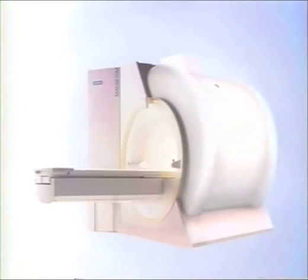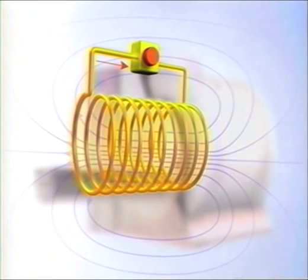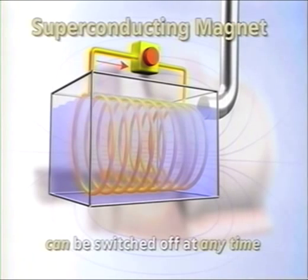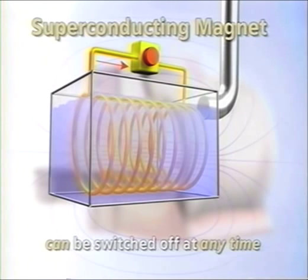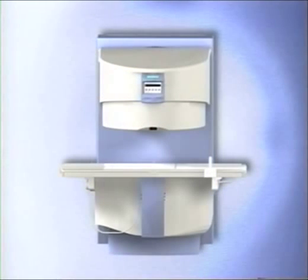Superconducting magnets are used to generate higher magnetic field strengths. In this case, the wire coils through which the current flows are cooled by liquid helium to 4 Kelvin above absolute zero, which is minus 269 degrees Celsius. The current is provided by a power supply unit during installation. But once superconducting, it can flow without an external power supply for several decades. Once cold, the current flows continuously through the circuit and generates the static magnetic field. In case of an emergency, a superconductive electromagnet can be switched off at any time.